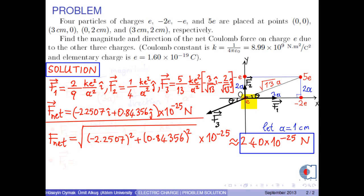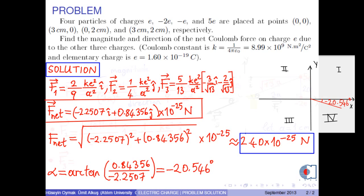And to find the direction of the net force, we use this formula, then we obtain negative 20.546 degrees. However, because F net is in the second quadrant, we add 180 degrees to this angle. As a result, the direction of the net Coulomb force on charge E due to the other 3 charges is found to be approximately 159 degrees.